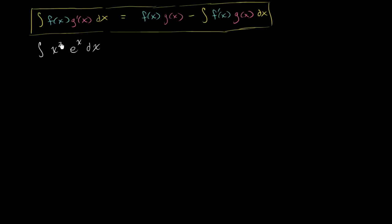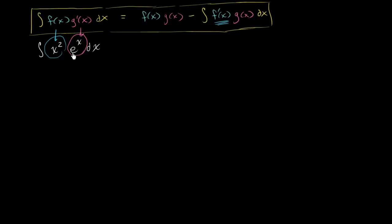In this case, if I take the derivative of x squared, it does become simpler — it becomes 2x. And if I take the antiderivative of e to the x, it doesn't become any more complicated. So let's assign f of x to be equal to x squared, since taking its derivative makes it simpler. And we assign g prime of x to be equal to e to the x, because its antiderivative is still just e to the x.